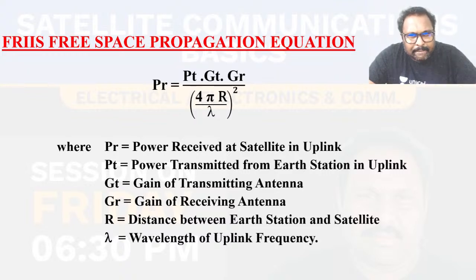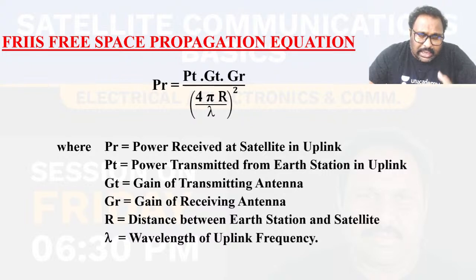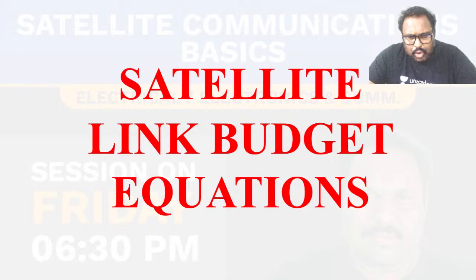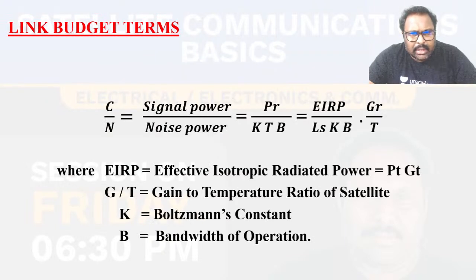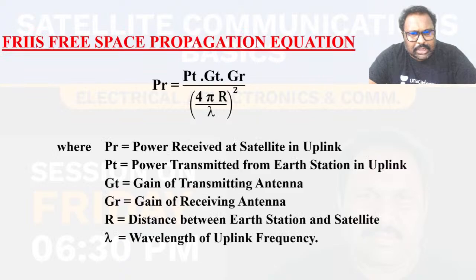I want to teach you majorly the free space propagation equation. Take 30 seconds to look at the notations. If you are comfortable, tell me — otherwise I will start teaching the proof and the link behind this equation. Because from this equation starts everything we need to study today: C/N ratio, G/T ratio, SNR ratio, EIRP — all these are link budget terms, and all of them are majorly depending on the free space propagation equation.